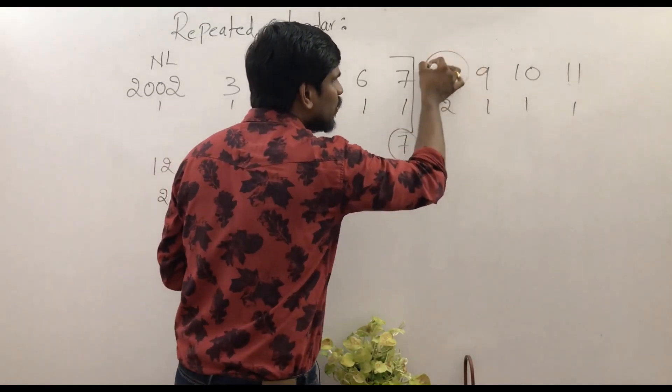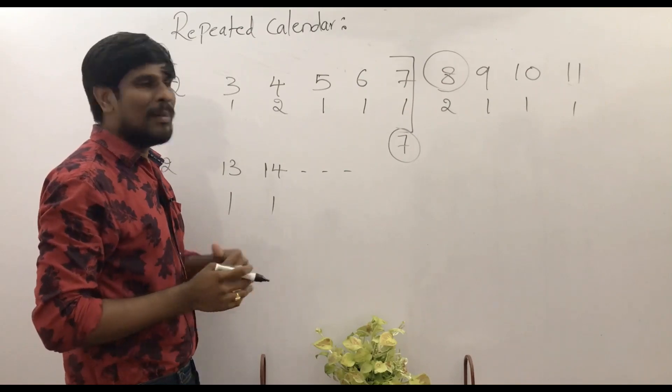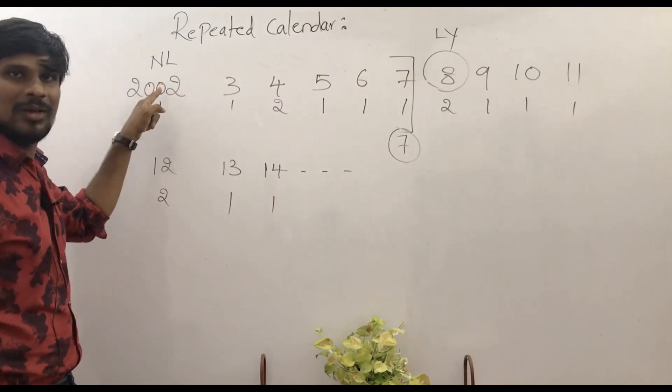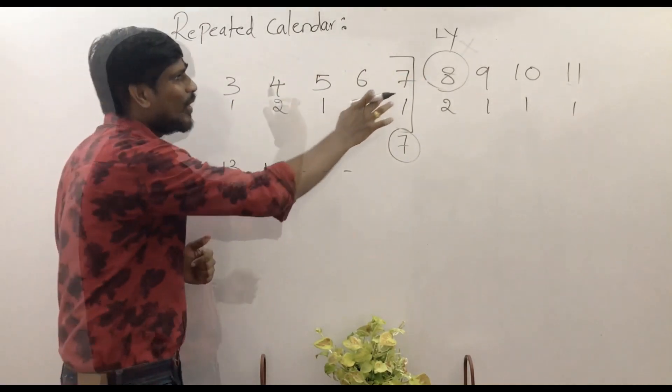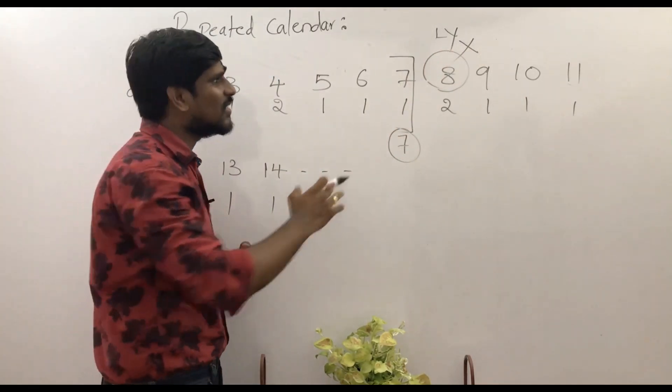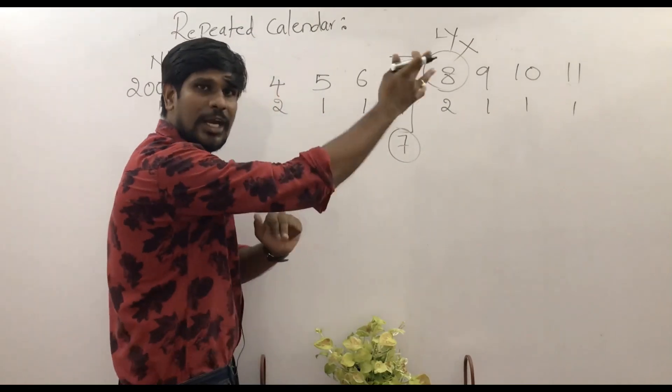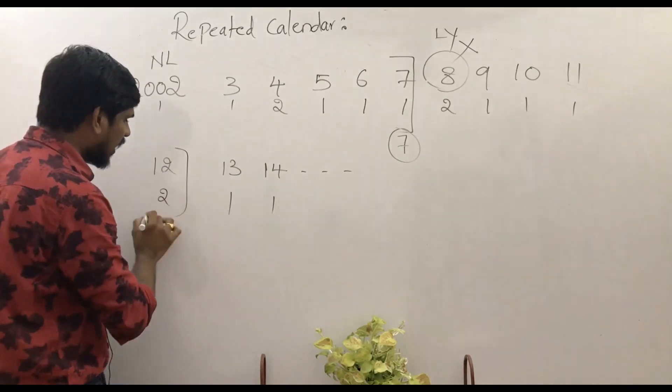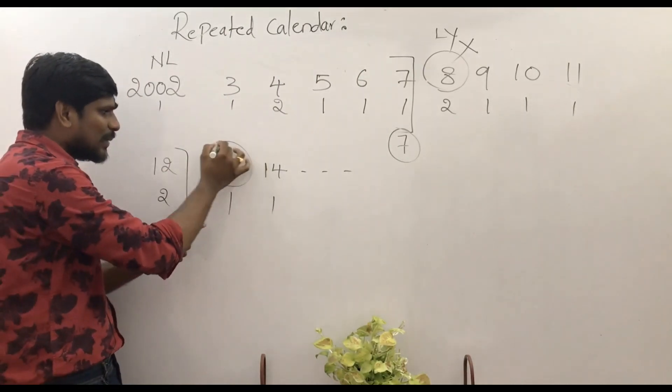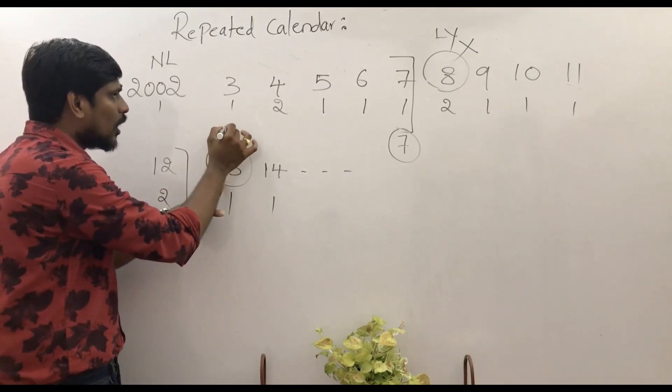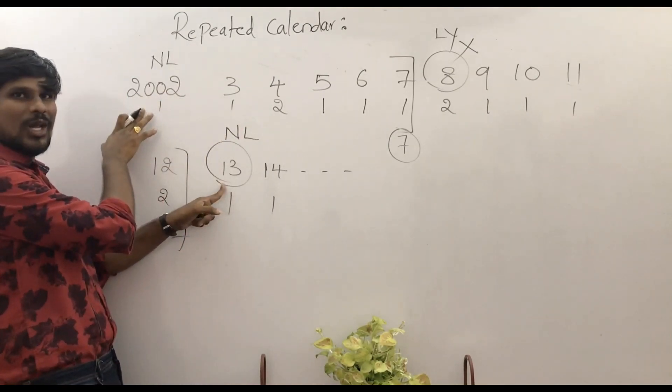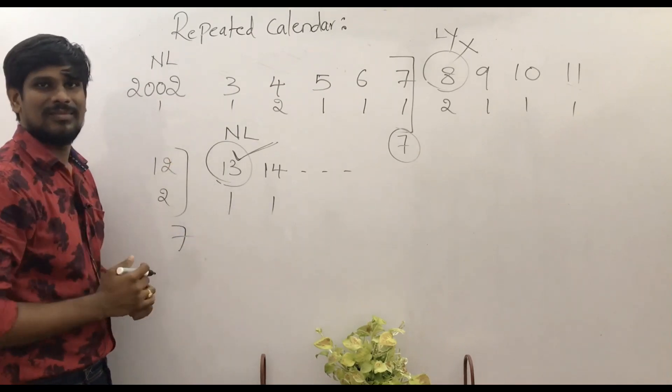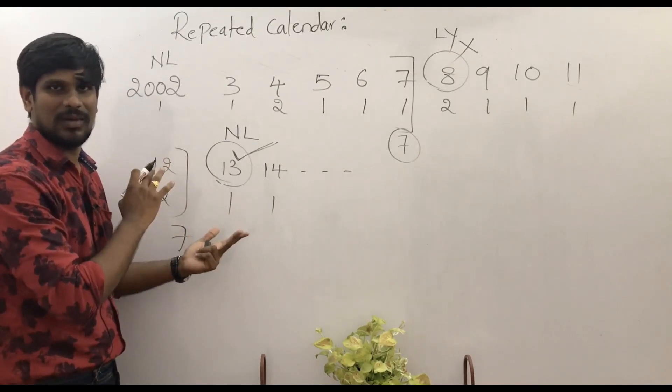The next year is repeated. But in 2008, is it leap year or non-leap year? This is leap year. But our question is non-leap year, so the answer should be non-leap year. As per our first condition, it fails. Let's continue: 2 plus 1 is 3, 4, 5, 6 is 7. Each is 7, so next year is repeated. In 2013, it is leap year or non-leap year? The question is non-leap year, the answer is non-leap year. So 2013 will be the required answer for this particular question. This is the actual process.